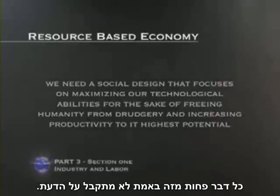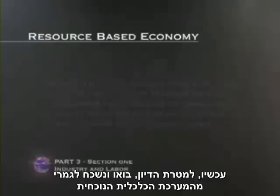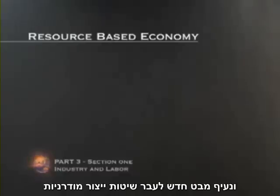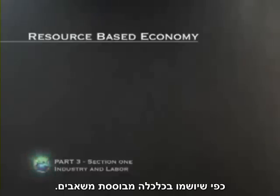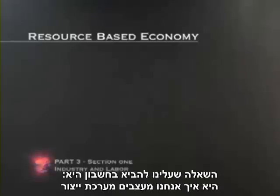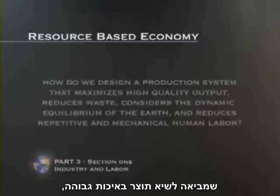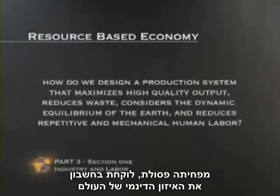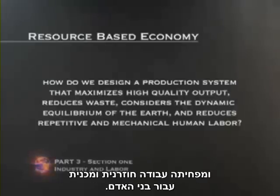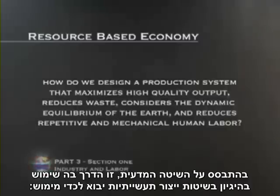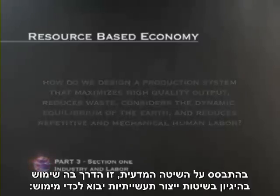Anything less is really unacceptable. Now, for the sake of argument, let's completely forget about our current monetary-based social system and take a fresh look at modern industrial production methods as would be implemented in a resource-based economy. The question to consider is: how do we design a production system that maximizes high-quality output, reduces waste, considers the dynamic equilibrium of the earth, and reduces repetitive and mechanical human labor? Based on the scientific method, here is how the logical reasoning for industrial production methods would unfold.